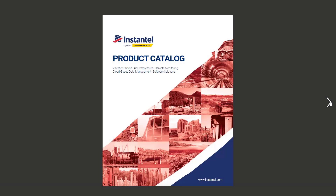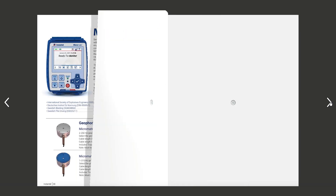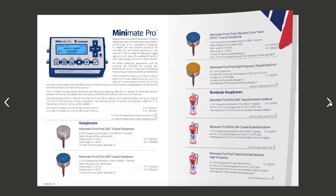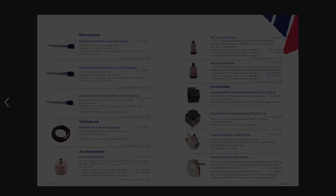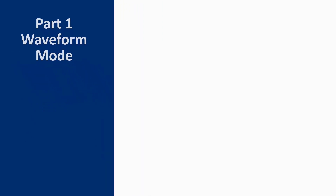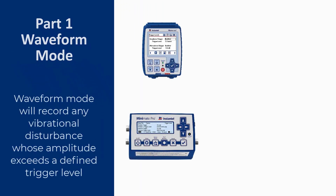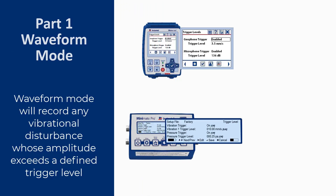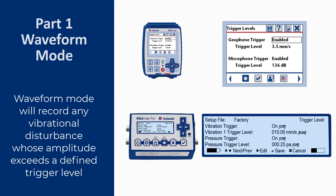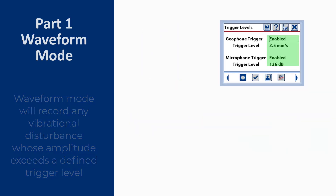For a full description of all sensors, please refer to our product catalog. The first record mode is Waveform. Waveform mode will record any vibrational disturbance whose amplitude exceeds a defined trigger level. This is true for both Micromate and Minimate units. For the sake of this video presentation, we will continue with the Micromate interface.